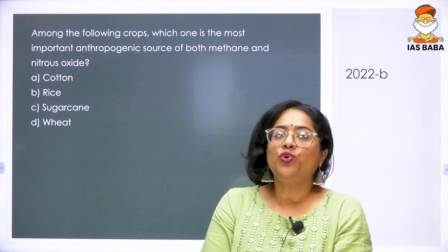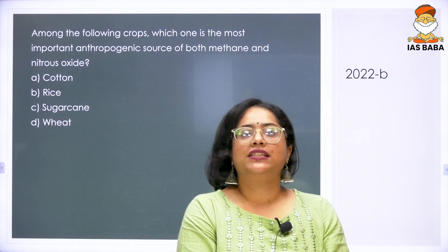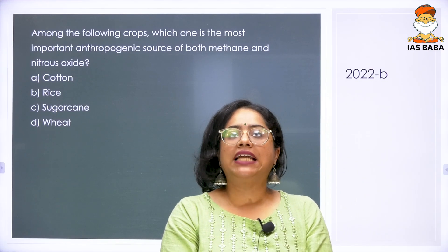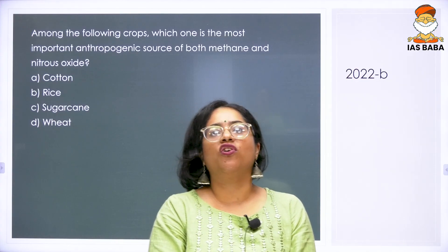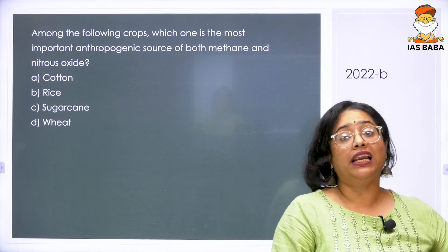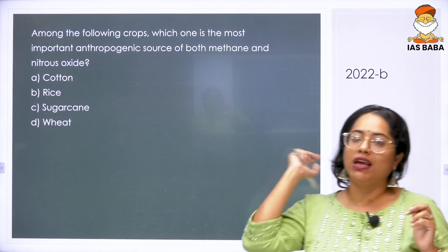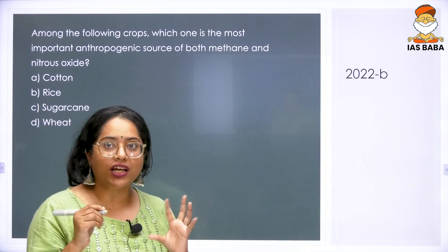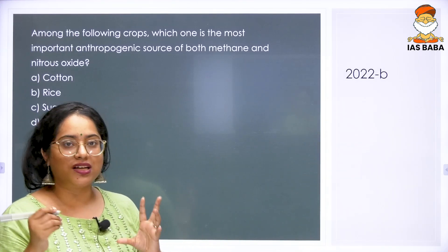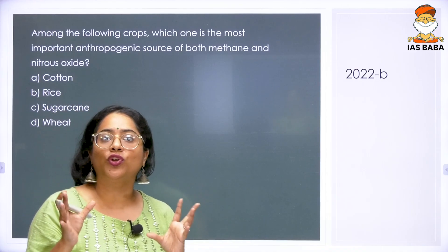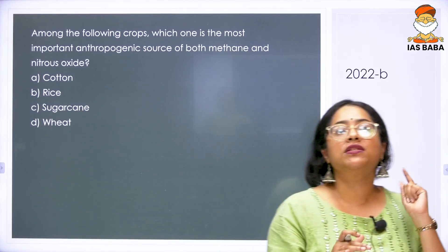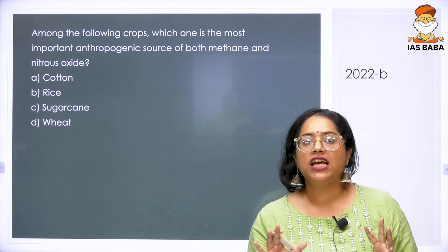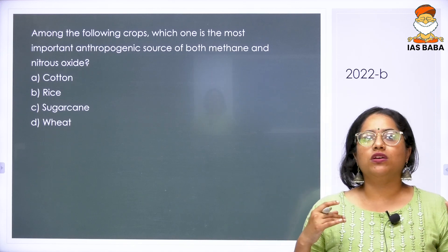This 2022 question asks: among the following crops, which one is the most important anthropogenic source of both methane and nitrous oxide? Anthropogenic means man-made or human-caused. Four crops are given: cotton, rice, dry sugarcane, and wheat. Let me give you a brief idea about these crops.